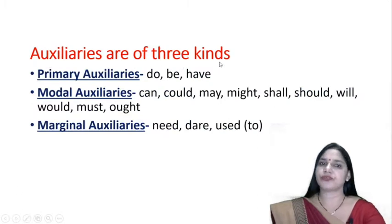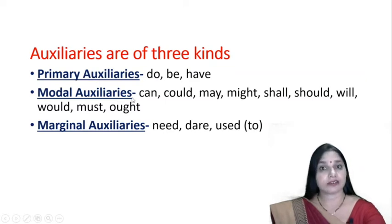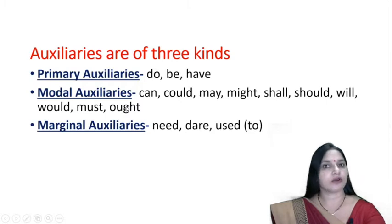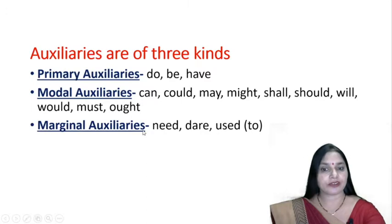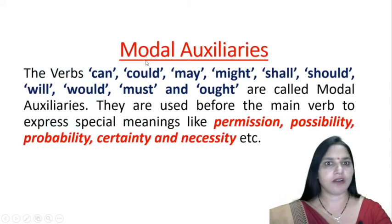Auxiliaries are of three kinds. Primary auxiliaries: do, be and have. Modal auxiliaries: can, could, may, might, shall, should, will, would, must and ought — these are called modal auxiliaries. Apart from these, there are marginal auxiliaries: need, dare and used to. Now let us see what modal auxiliaries are.